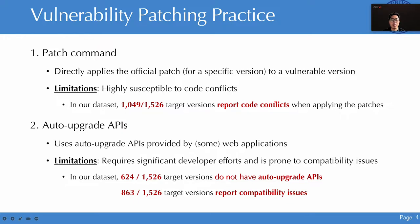To the best of our knowledge, there are two existing vulnerability fixing practices. One is using the patch command to deploy patches directly, and the other is using the auto-upgrade API provided by the web application. However, for the patch command, we found it was highly susceptible to code conflict errors when applying patches to old versions — more than two-thirds of the old versions in our dataset threw this error. For the auto-upgrade API, not all applications provide it, and upgrading this way is prone to compatibility issues, such as conflicts between MySQL or PHP versions before and after the upgrade.